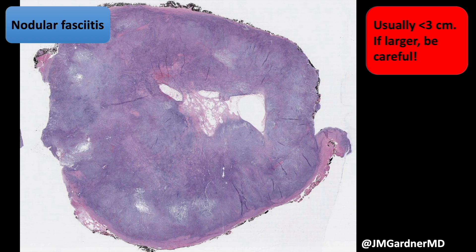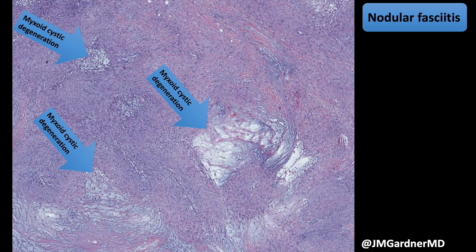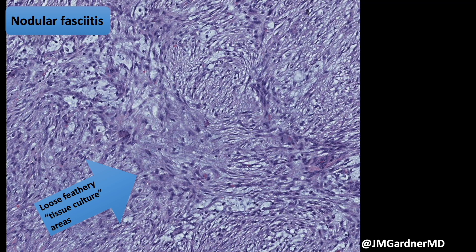I said 'tumor' because even though we used to think of this as a reactive myofibroblastic process — because it looks so much like reactive myofibroblasts — it turns out these actually have a translocation and are currently considered a form of neoplasia. Here's a closer look at that myxoid cystic degeneration: well developed on the right, more subtle and early on the left. In any of those forms, a myofibroblastic proliferation with myxoid pockets, pools, or cystic change is a great clue for nodular fasciitis.